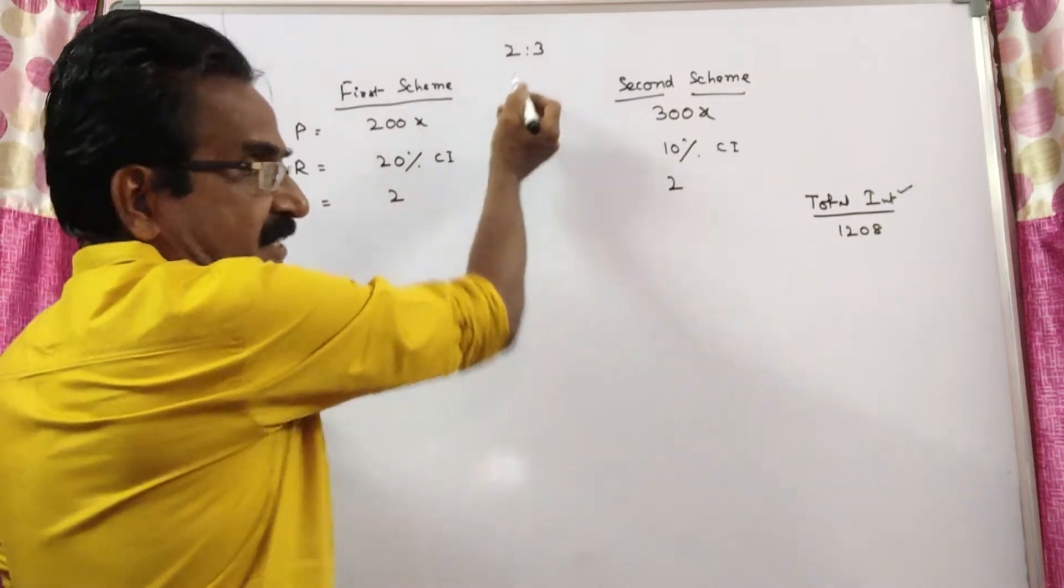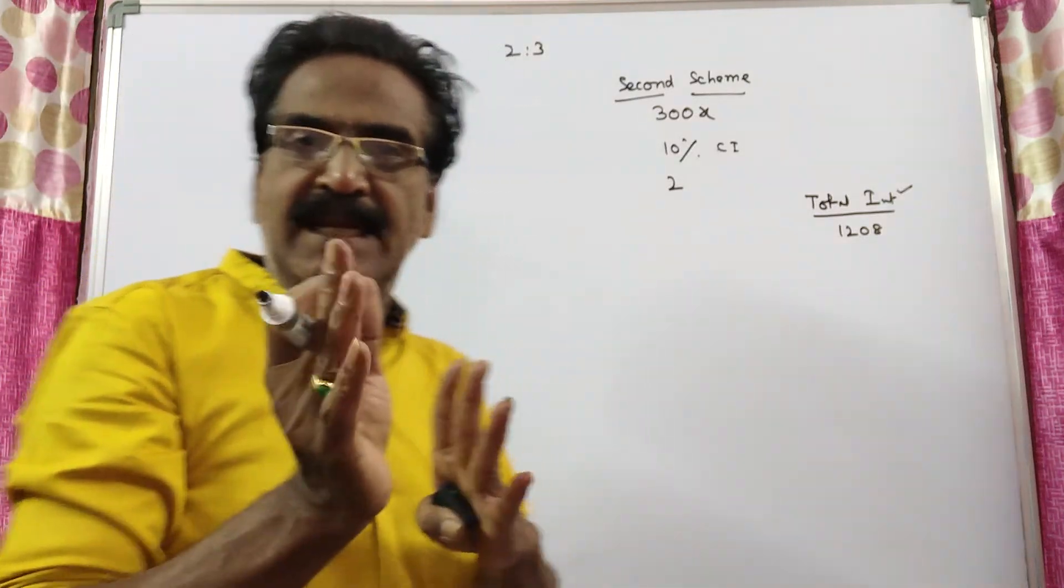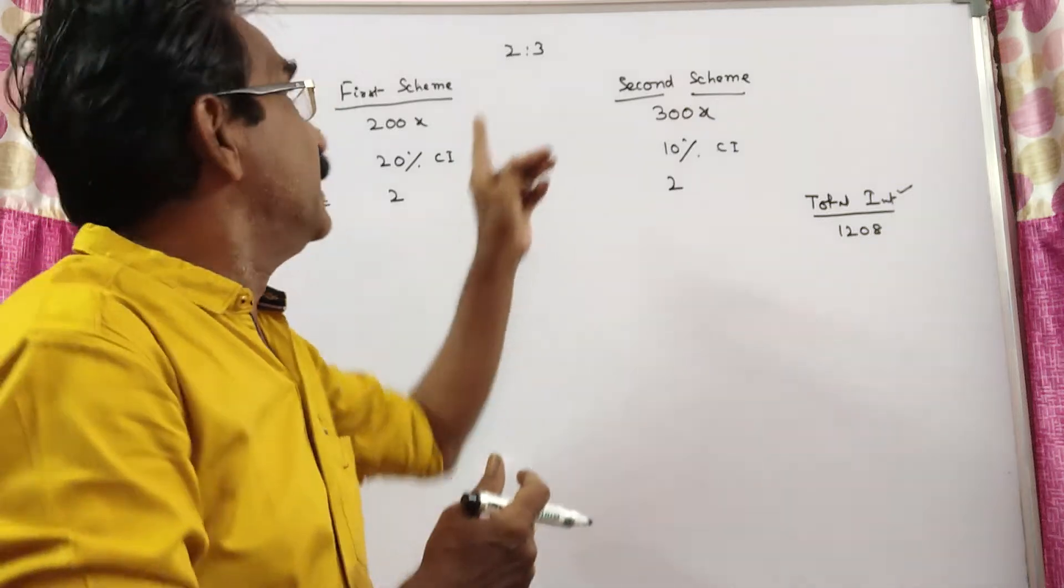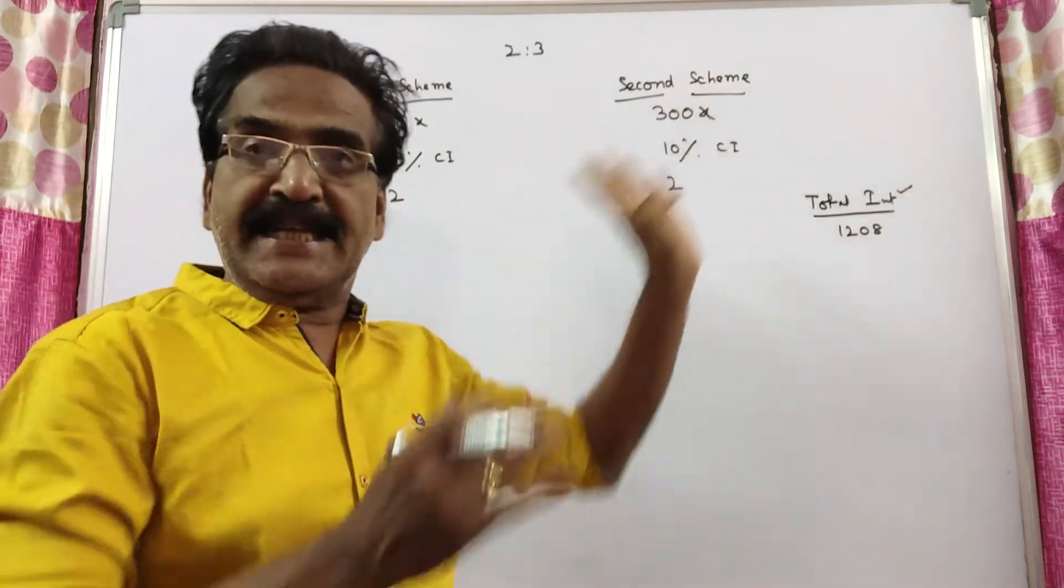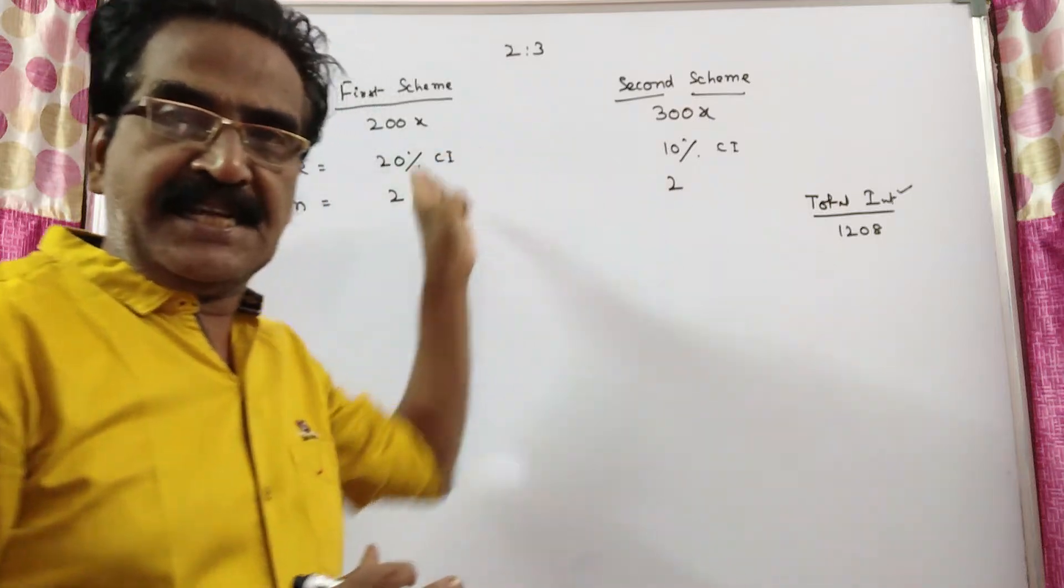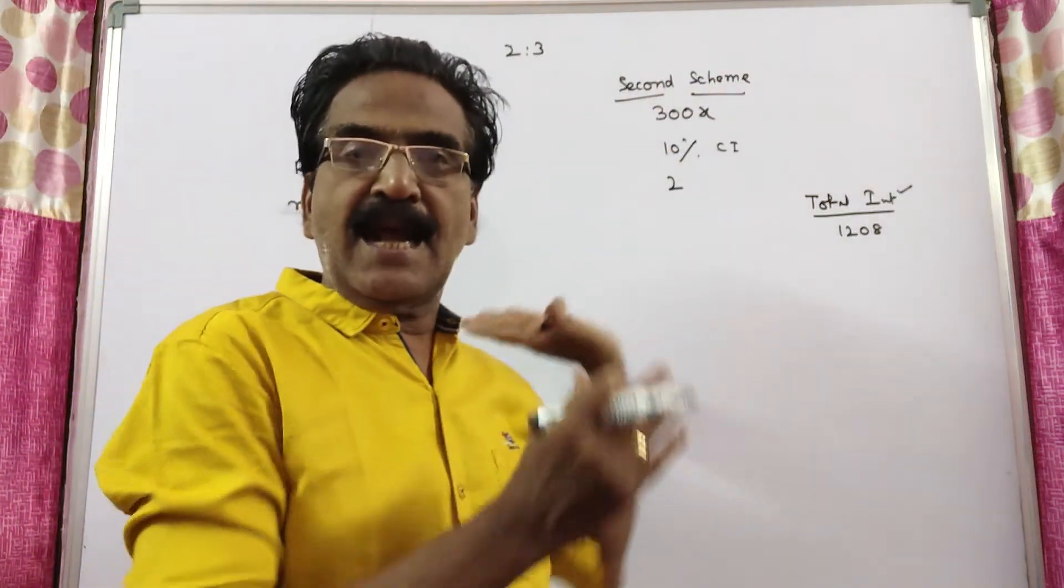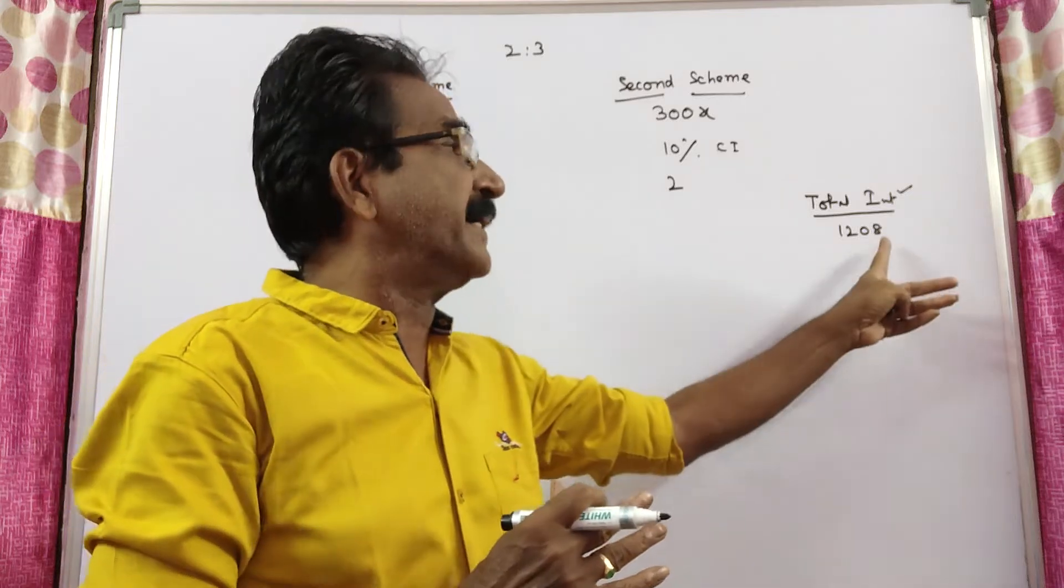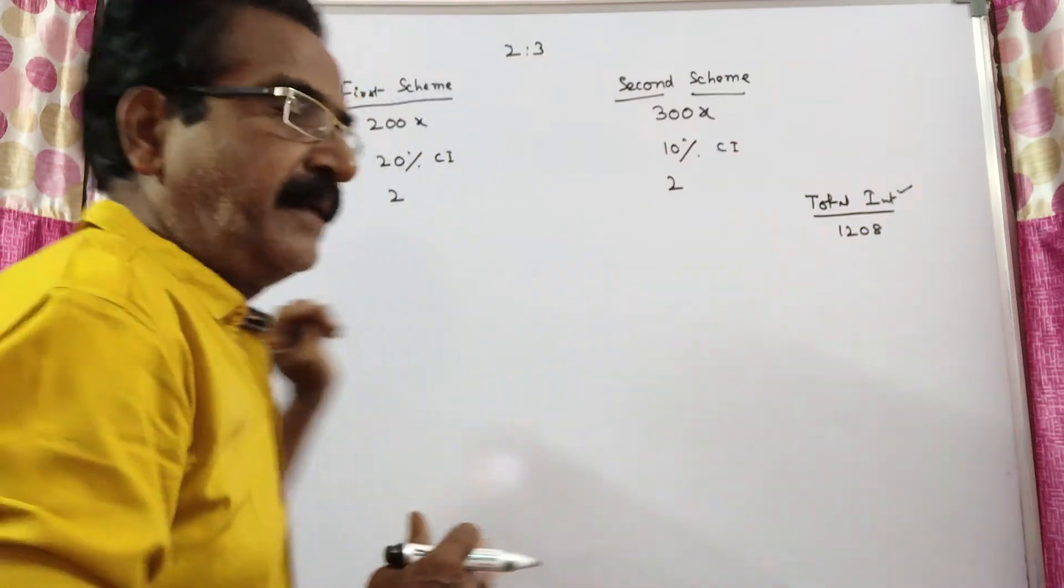See friends, he has invested in the ratio 2 is to 3. Let us say he has invested 200x in the first scheme, 300x in the second scheme. Let us calculate the compound interest here and here and let us add the two interest and make it equal to 1208.